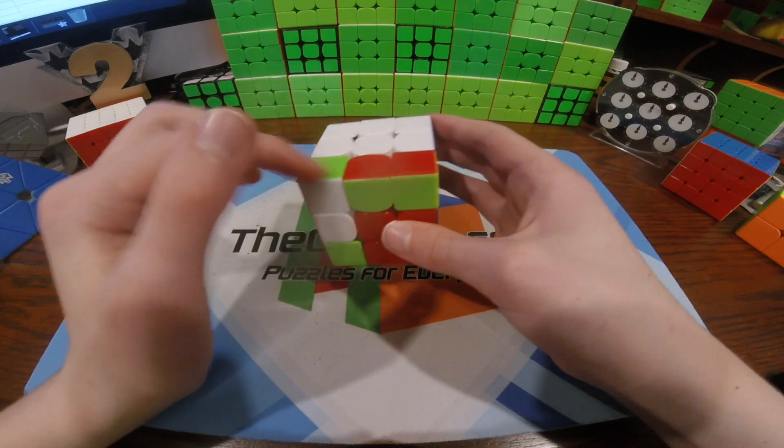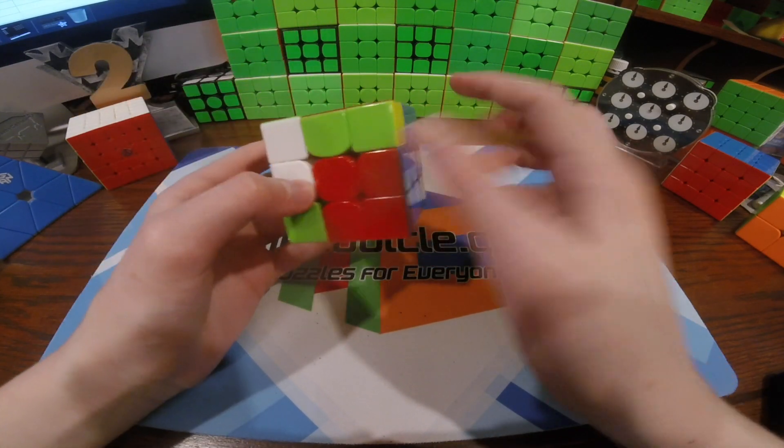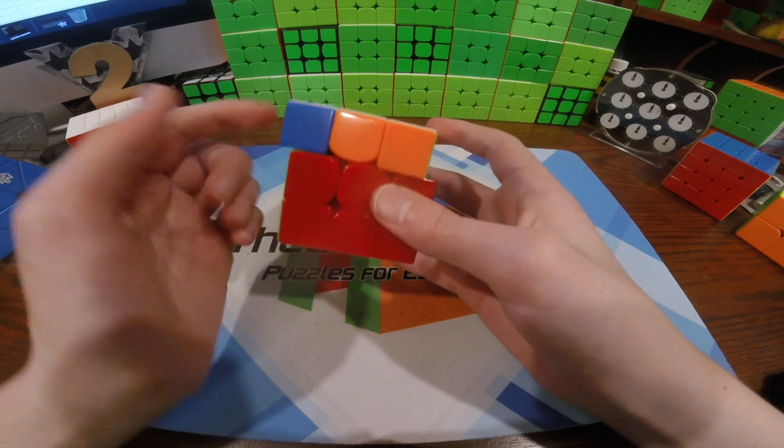Then here, I knew that I was gonna get an OLL skip, and I think I saw it from this angle and saw the blocks, so I knew I was gonna get like a Jperm or an Lperm or something. Jperm.